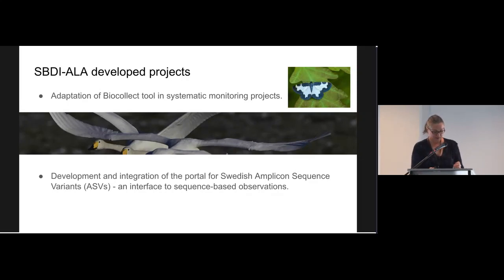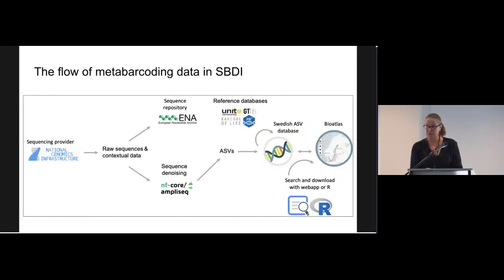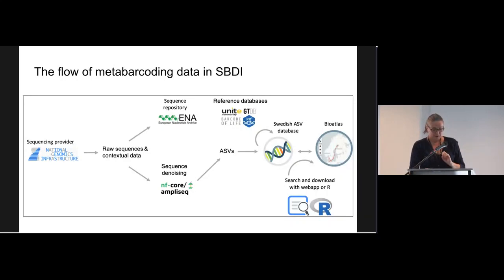We also have the ASV — the Swedish Amplicon Sequence Variant portal — which is an interface to sequence-based observations. This ASV portal was developed from scratch by the Swedish team working with metabarcoding data. One of the key people behind that is Maria Prager, who explained it in great detail in Symposium 8 this morning. I'm showing a graph here of the flow of metabarcoding data. The portal is integrated with ALA-based components used for searching and viewing records, as well as for authentication.